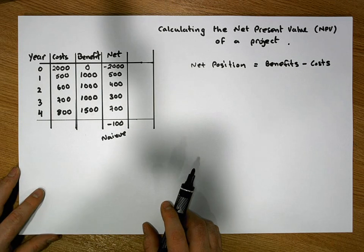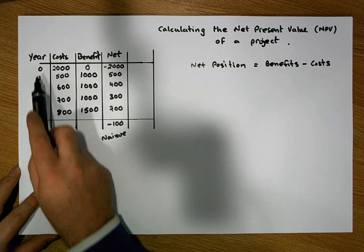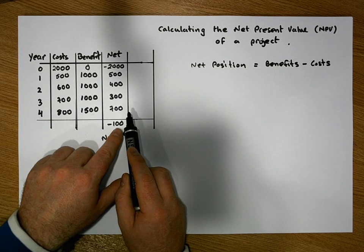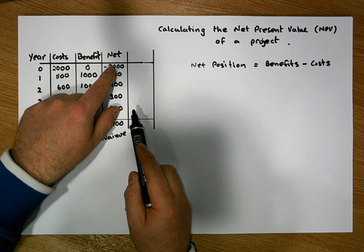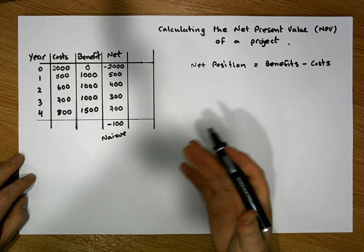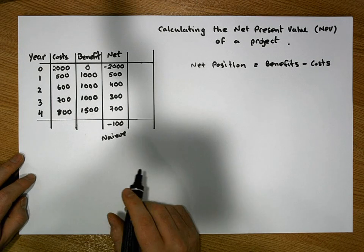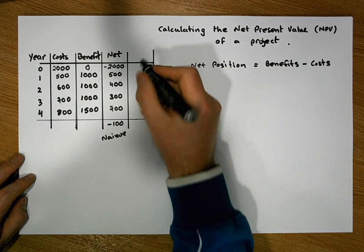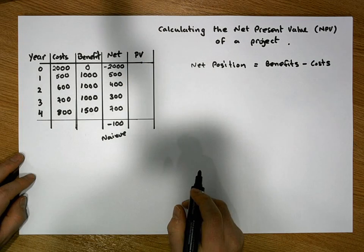But there's one thing we haven't taken into consideration. The 700 euros in year four isn't the same as 700 euros in today's terms, due to the time value of money. To properly appraise this project, we should calculate the present value (PV) for each one of these net positions.